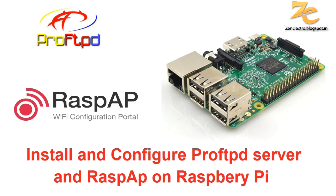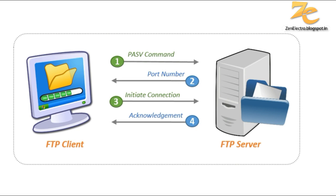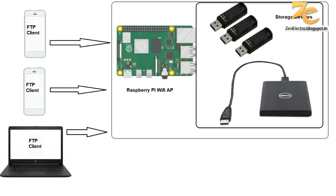In this video we are going to set up ProFTP server and RaspyAP on Raspberry Pi. ProFTP server is used to share files between the FTP client and FTP server, and RaspyAP is used as an access point so any other device can connect to the Raspberry Pi — it will act as a router. You can run your FTP client on any Android or network device and access files stored on the Raspberry Pi using the FTP server.